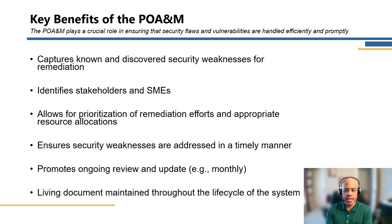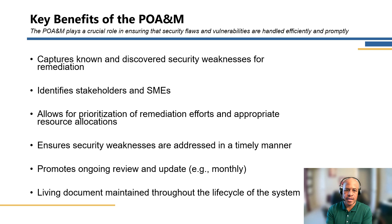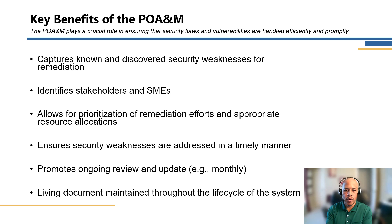It also ensures that weaknesses are addressed in a timely manner, that the overall security posture of the system is continually improved, and promotes ongoing review and updates. Monthly is a typical cadence — you want to ensure the POAM remains relevant to the system as it migrates and changes, accurately reflecting any weaknesses, either open or closed. The POAM is a living document that should be maintained throughout the life cycle of the system, containing both open and closed POAMs to show the holistic history and represent the current security posture of the system.